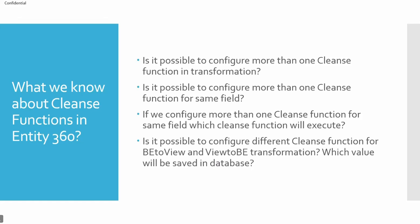The question is whether we can use more than one cleanse function for any given transformation. The next question is: is it possible to configure more than one cleanse function where the output points to the same field? For example, if you are using first name and last name as source fields and the target is full name, can that full name field be used in multiple cleanse functions? If we configure more than one cleanse function for the same field, which one will execute — the first one, the second one, or all of them?